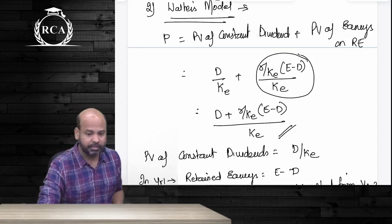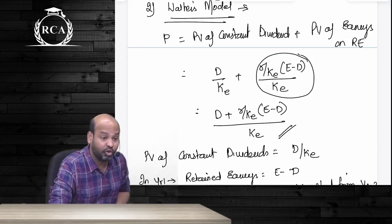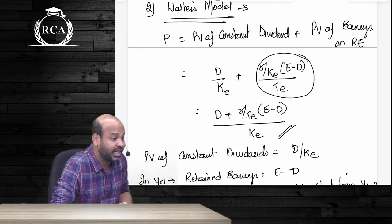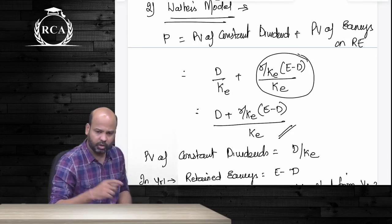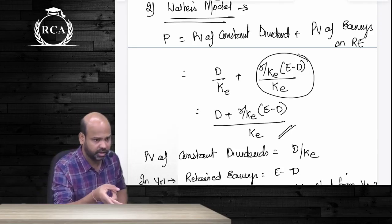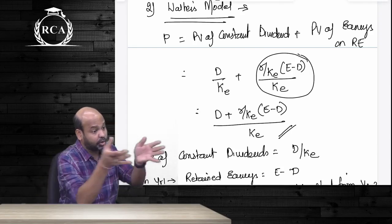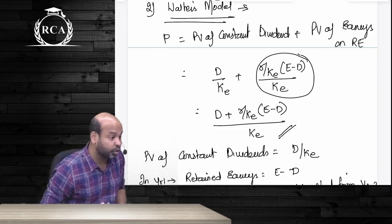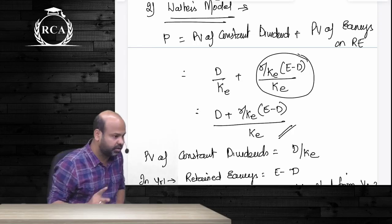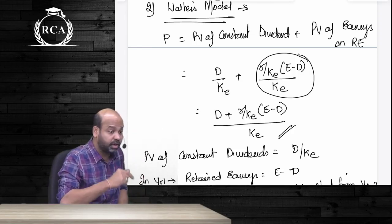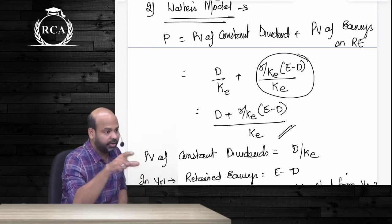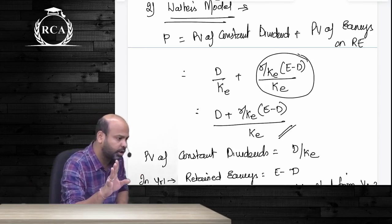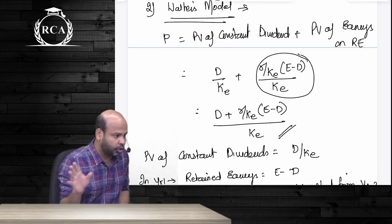An important point: if there is no reference to a dividend discount model and the question is on Walter's model, the earnings given will be taken directly in the numerator without adjusting for any growth rate. The logic is that Walter's model does not consider earnings or dividends changing year after year — dividend is constant under Walter's model. However, if the question makes clear-cut references, then you consider growth rate. For standalone questions on Walter's model and Gordon's model, whatever dividend is given in the question is taken as D1 directly, without adjustment for growth rate.